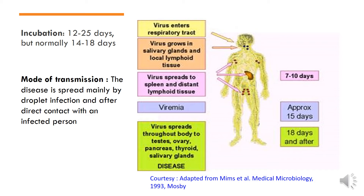As seen in this picture, the virus gains entry into the body through the respiratory tract and grows in the salivary glands and the local lymphoid tissue. In around 7–10 days, it starts spreading to the spleen and the distant lymphoid tissues. By 15 days, viremia has set in.